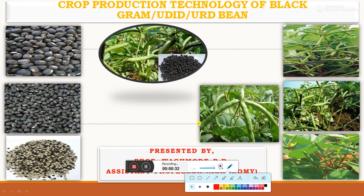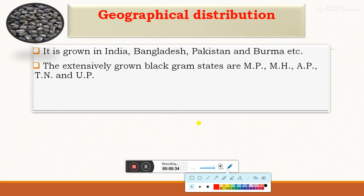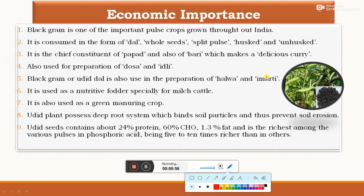The geographical distribution of black gram: the most important black gram growing countries are India, Bangladesh, Pakistan and Burma. Extensively grown black gram states are Madhya Pradesh, Maharashtra, Andhra Pradesh, Tamil Nadu and Uttar Pradesh. Among these, Madhya Pradesh is ranked first in terms of production of black gram.